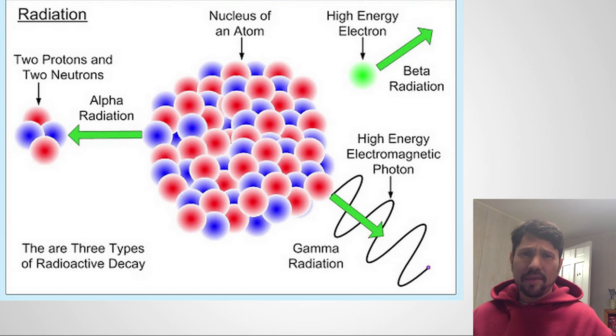Here we have a picture showing the nucleus of an atom consisting of protons and neutrons, and here's alpha radiation, here's beta radiation, those two are particulate radiation, and here's our gamma radiation, which is an electromagnetic wave. Those are the three types of radioactive decay. We'll go into more detail on each.